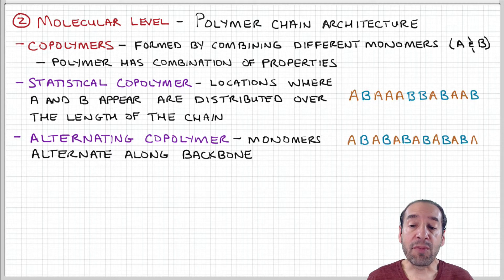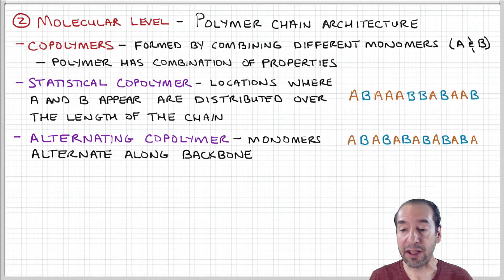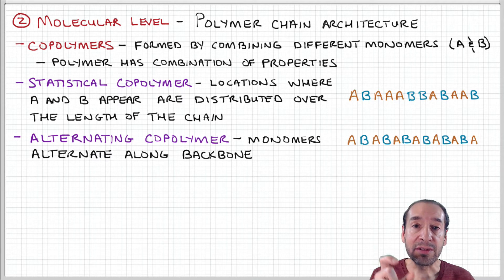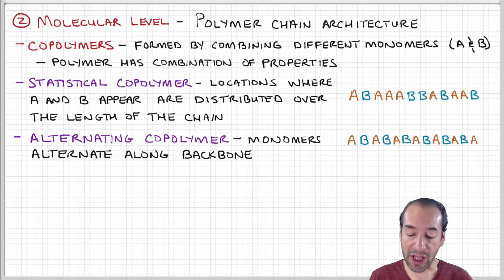An alternating copolymer is a structure where these two different units alternate. For example, A-B-A-B, or you could have the same lengths of A and B alternate, like A-A-A-B-B-B-B-A-A-A. But these groups, clusters of A's and B's, repeat in a well-defined way.